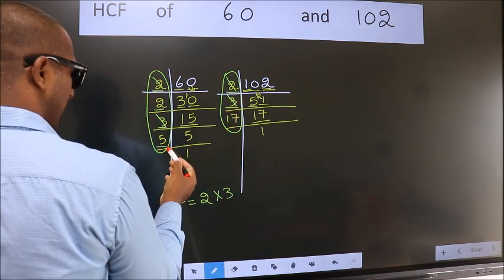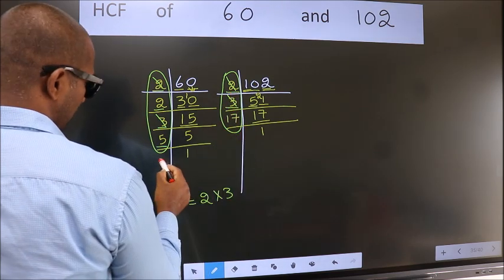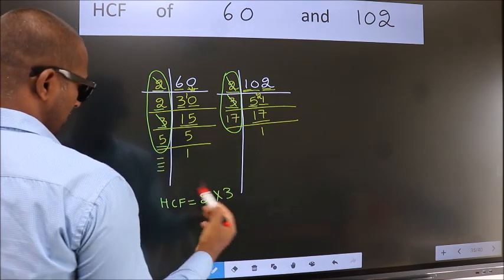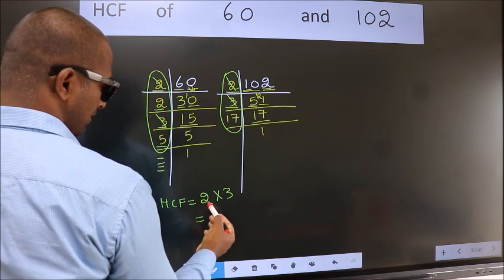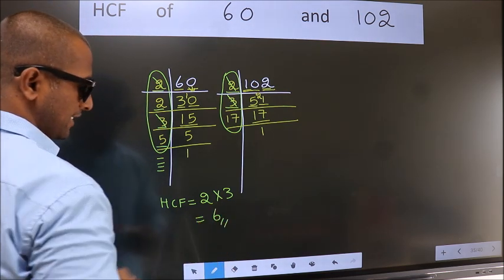Next number 5. Do we have 5 here? No. No more numbers have been left out. So our HCF is 2 into 3. 6 is our HCF.